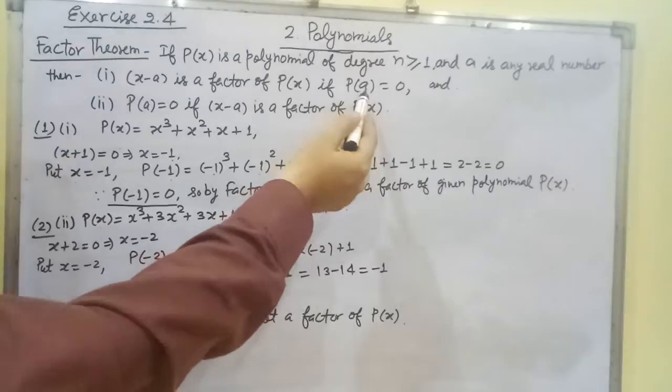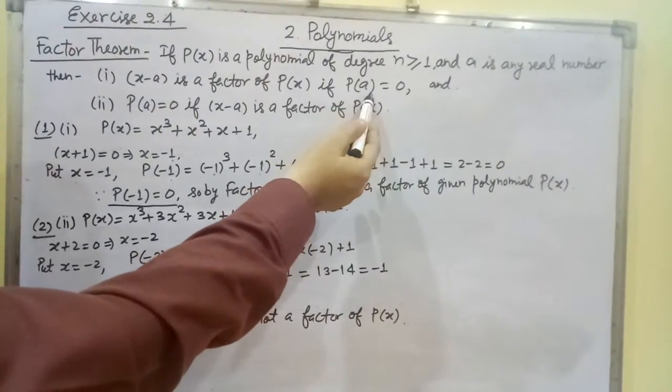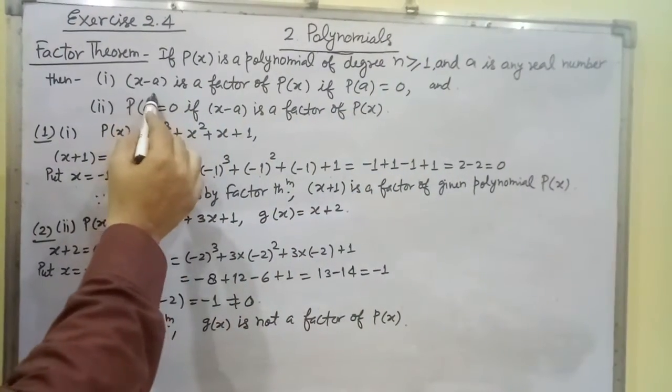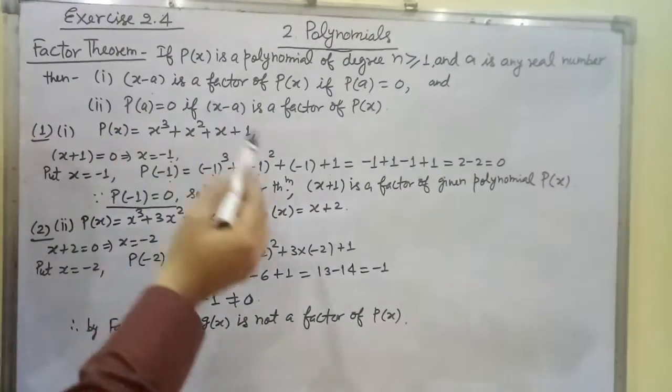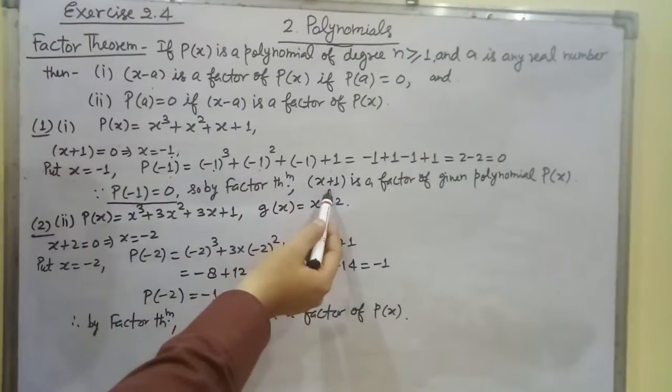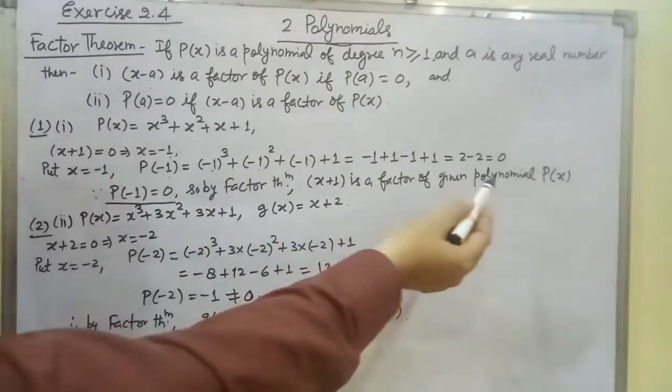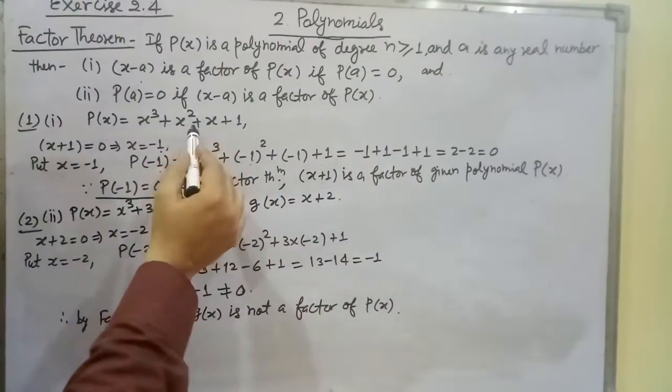By the Factor Theorem, if P(a) equals 0, then x minus a is a factor of P(x). Since P(-1) equals 0, x plus 1 is a factor of the given polynomial P(x).